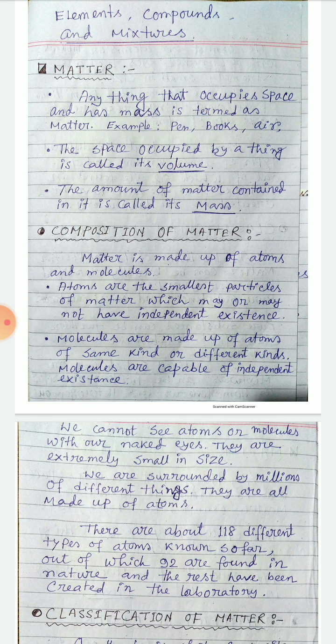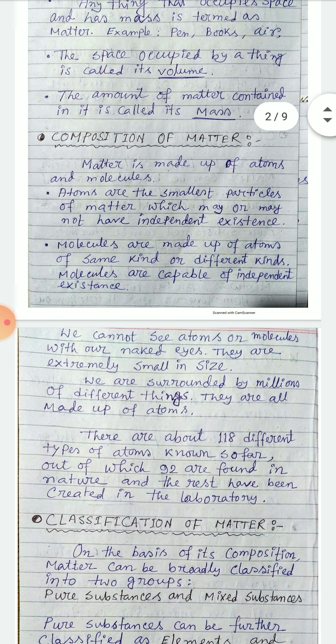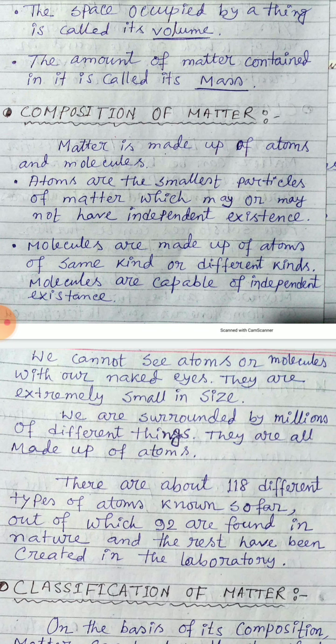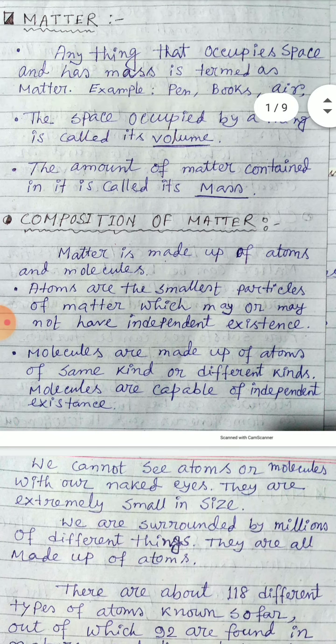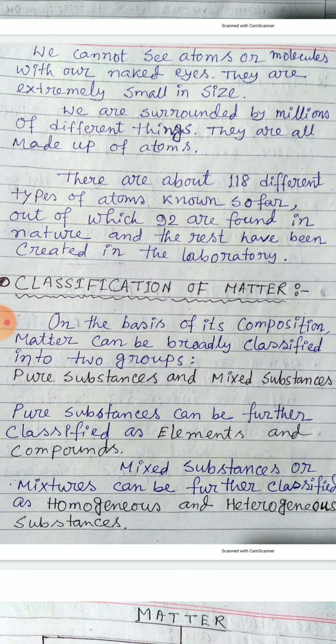Now, composition of matter: matter is composed of small particles called molecules and atoms. Atoms are the smallest particles of matter which may or may not have independent existence, while molecules are made up of atoms of the same kind or different kind. Molecules are capable of independent existence. That is the basic difference between atoms and molecules.